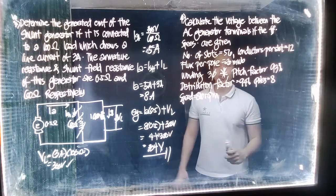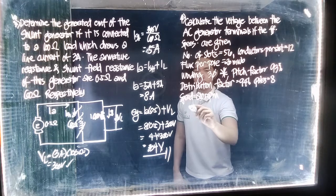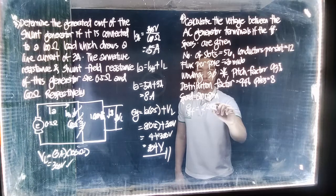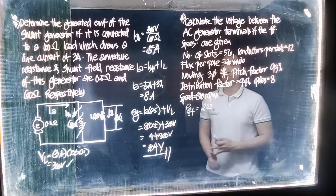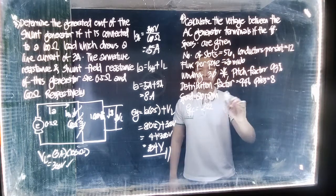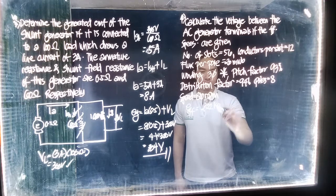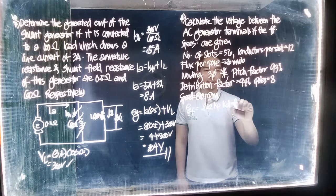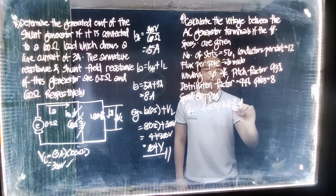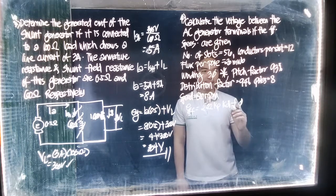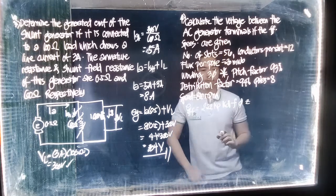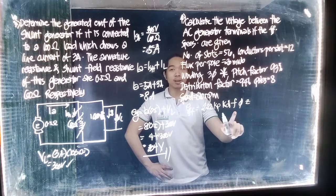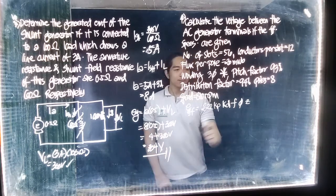Let us first determine what formula we're going to use for this particular problem. For this particular problem, we're going to use the effective voltage formula: E is equal to 2.22, as I discussed in the video lecture about the formulas, times the pitch factor times the distribution factor times the frequency times the flux, and lastly, the conductor per phase. As you can see, we don't have the frequency yet.